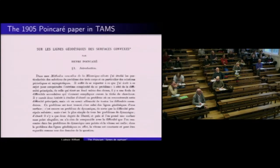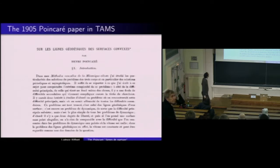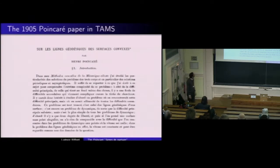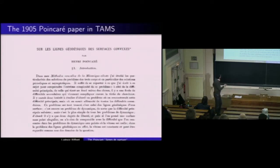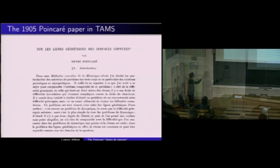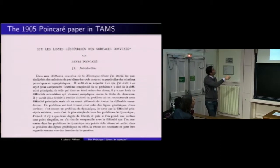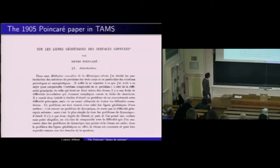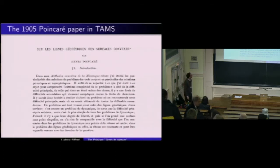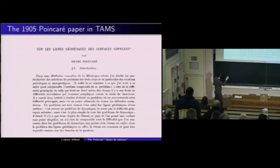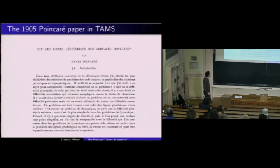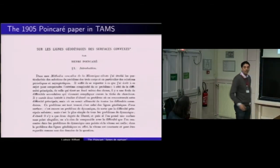Je voudrais parler d'un papier qu'a publié Henri Poincaré en 1905 dans les Transactions de l'AMS. Ce papier s'intitule « Sur les lignes géodésiques des surfaces convexes ». Poincaré explique dans l'introduction qu'il a eu à étudier les particularités des solutions du problème des trois corps, et il se propose d'étudier un problème plus simple — les lignes géodésiques sur les surfaces convexes — qui contient quelques-unes des difficultés du problème des trois corps, mais avec moins de degrés de liberté, sans point d'équilibre ni phénomène de collision.